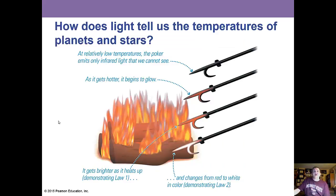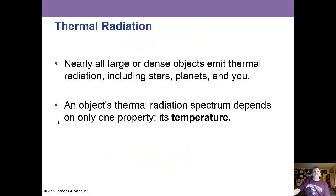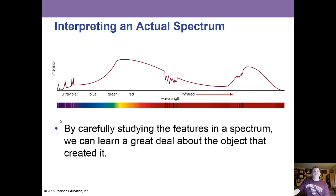How does light tell us about the temperature of planets and stars? Nearly all large or dense objects emit thermal radiation, including stars, planets, and yourself. An object's thermal radiation spectrum depends on only one property: temperature. By carefully studying the features of a spectrum, we can learn a great deal about the object that created it.